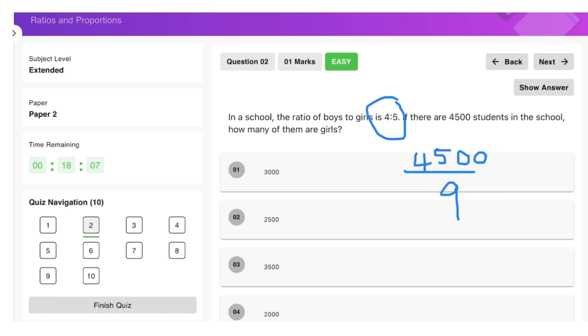Now we are looking at how many of them are girls. Girls is basically 5 parts, so this is going to be 5 times 500, which equals 2500. So 2500 is the answer here.